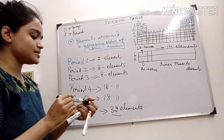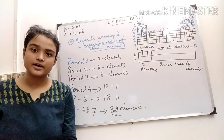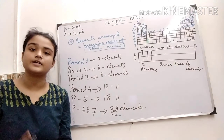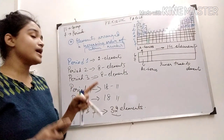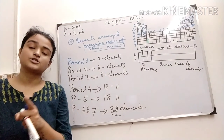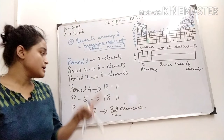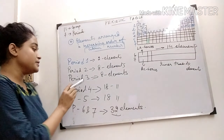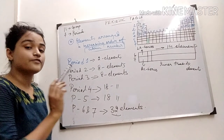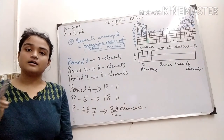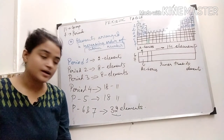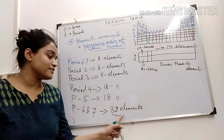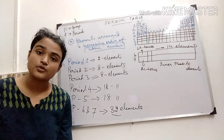Period 1 is the smallest period due to the presence of 2 elements: hydrogen and helium. Period 2 has 8 elements — this is a small period. Period 3 also has 8 elements, again a small period. Periods 4 and 5 have 18 elements — long periods. Periods 6 and 7 are the longest periods due to the presence of 32 elements.